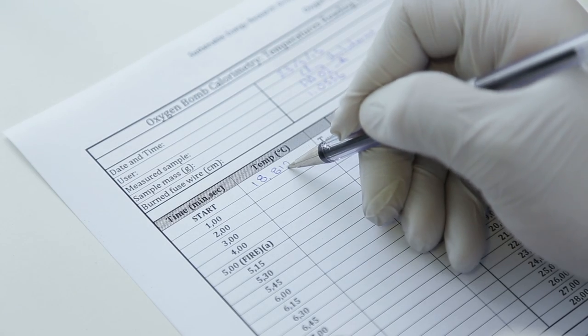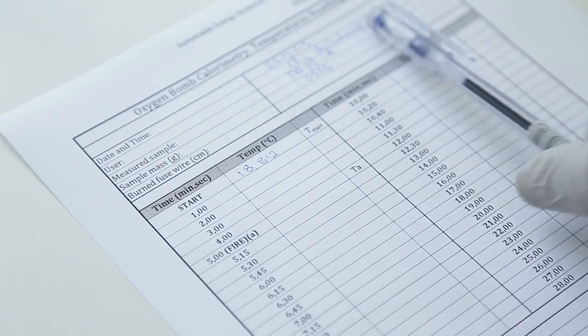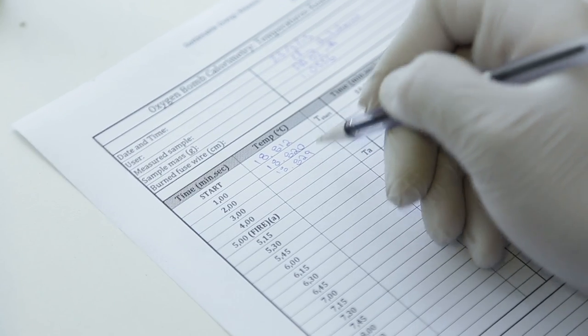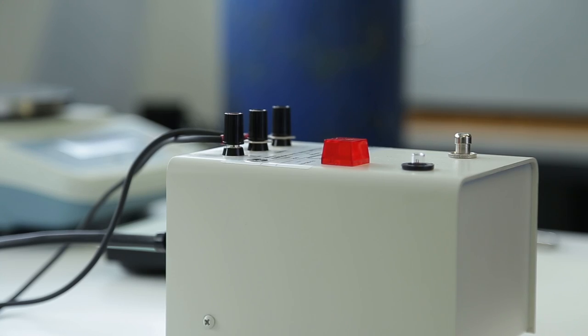At the end of this period, record the time on the timer of the digital thermometer and read the temperature. Read and record the temperatures at 1 minute intervals for 5 minutes. At the start of the 6th minute,